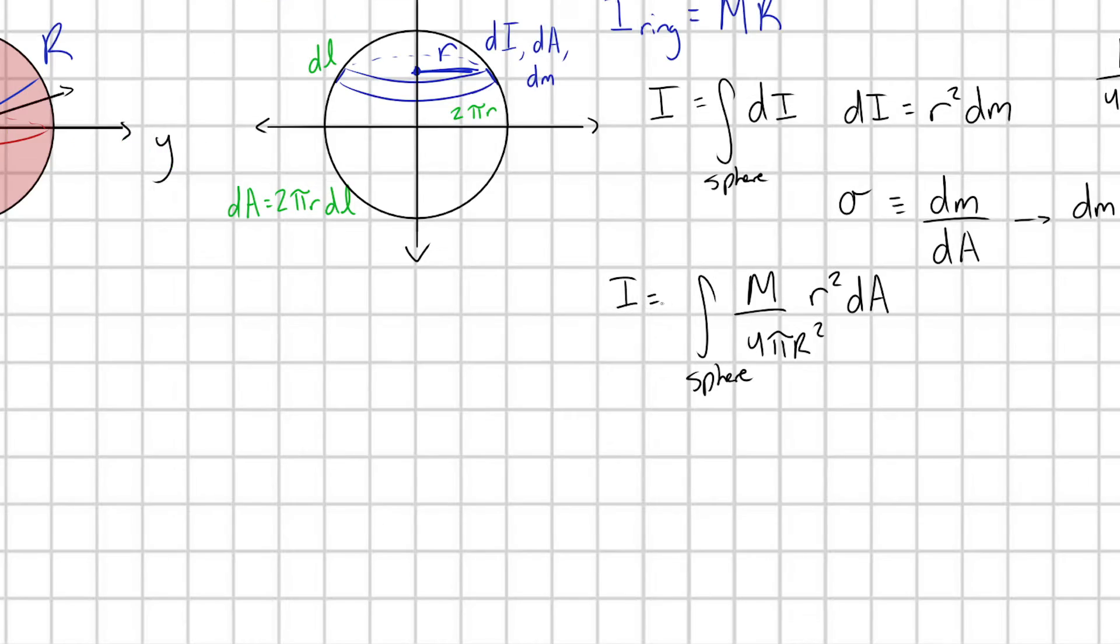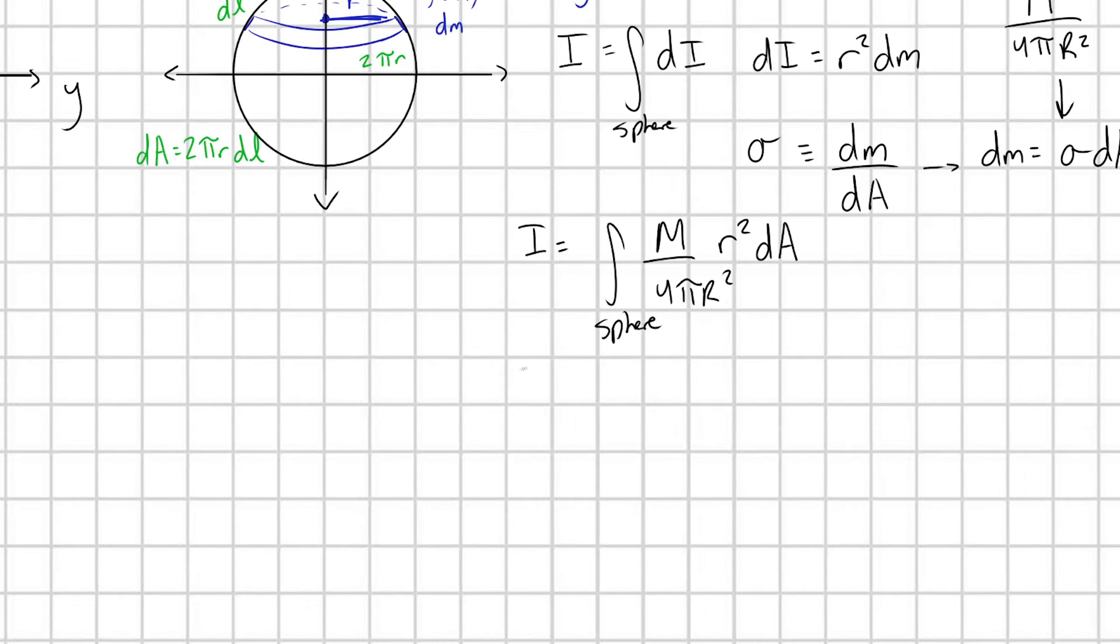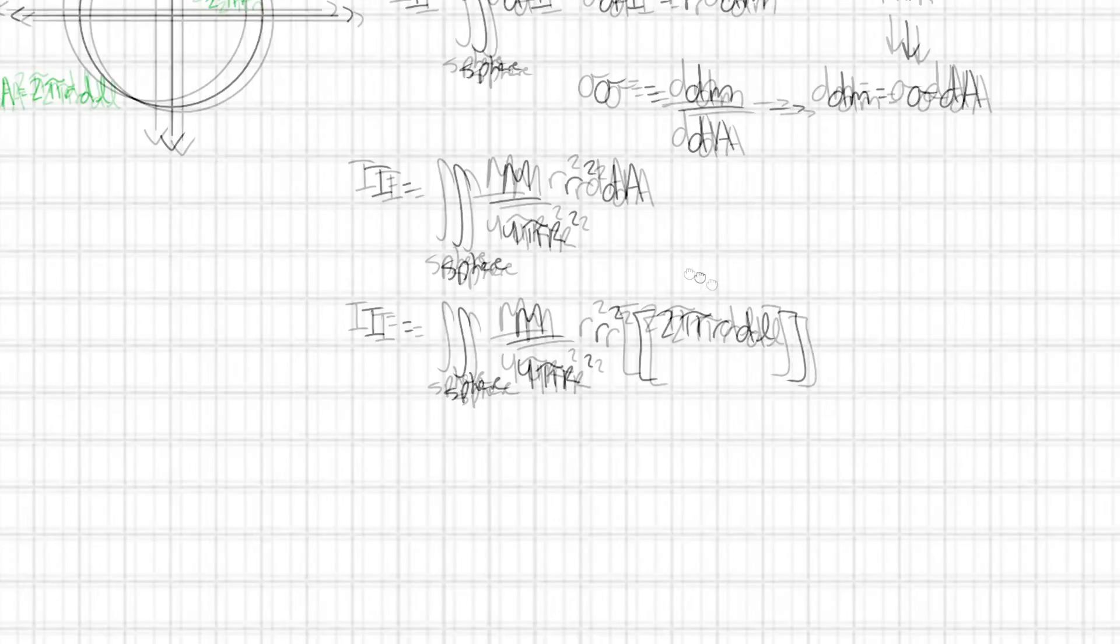All right, so let's update our integral. We're going to have I equal to the integral over my sphere. I'll just plug straight in and then we'll cancel terms out. So m over 4 pi r squared times r squared times 2 pi r dL.